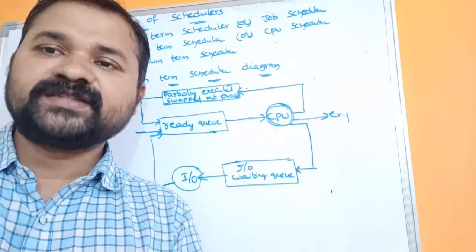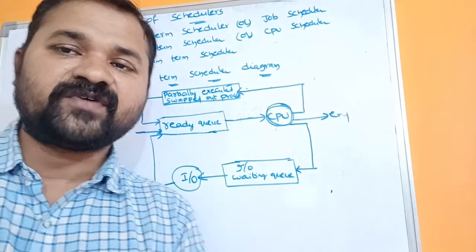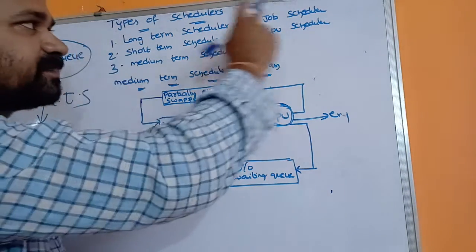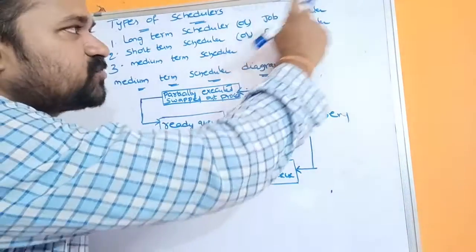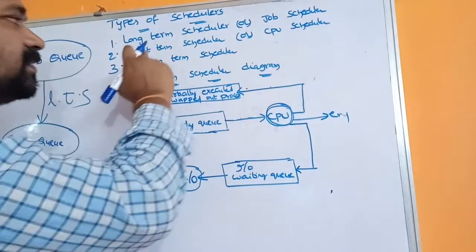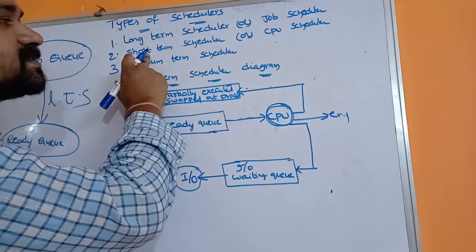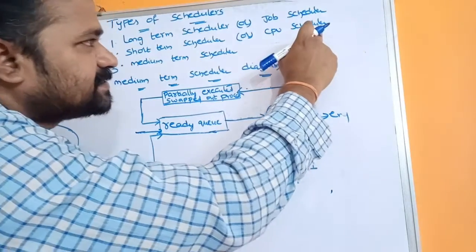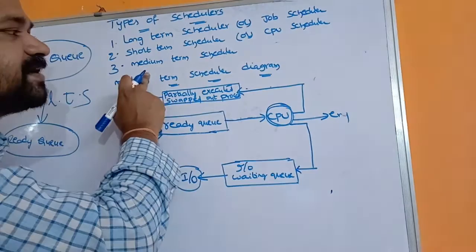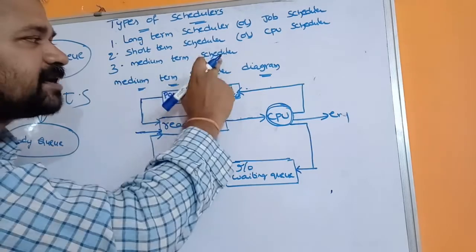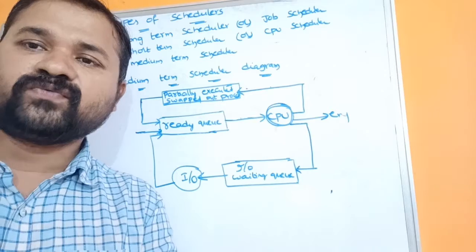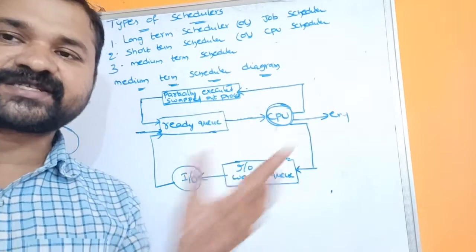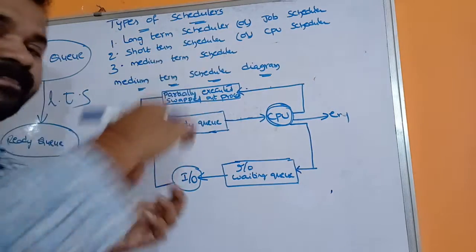Mainly there are three types of schedulers available. The first one is the long-term scheduler, which can also be called the job scheduler. The second one is the short-term scheduler, which can also be called the CPU scheduler. The third one is the medium-term scheduler. In this video we are going to discuss about these three schedulers.